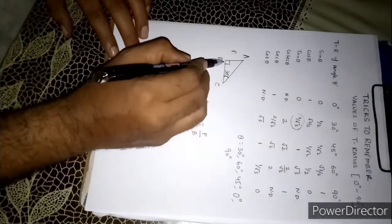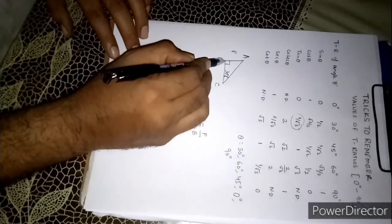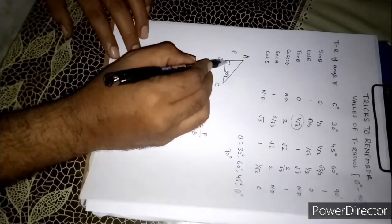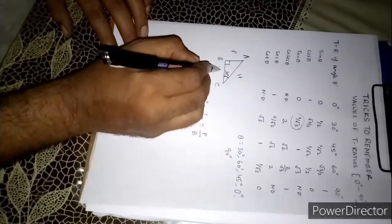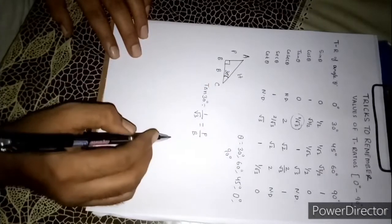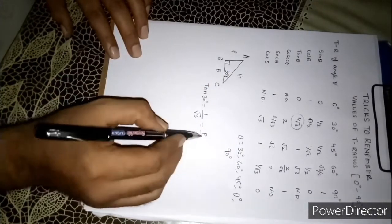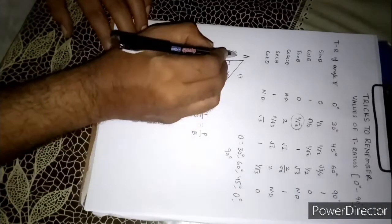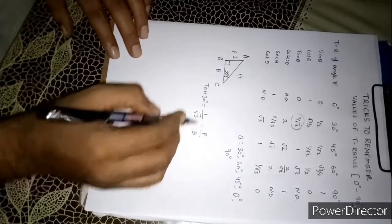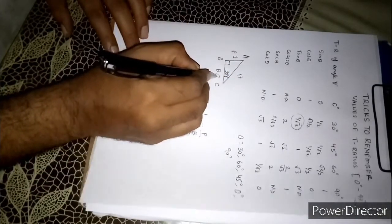And opposite to the perpendicular means opposite to angle B is hypotenuse. And the remaining side is base. So what is perpendicular here? Perpendicular here is 1. You can write it here 1. And what is base? Root over 3.